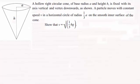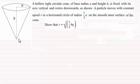Hi. Now in this example, what we've got here is a hollow right circular cone of base radius a and height h. And it's fixed with its axis vertical and the vertex is downwards as shown here.